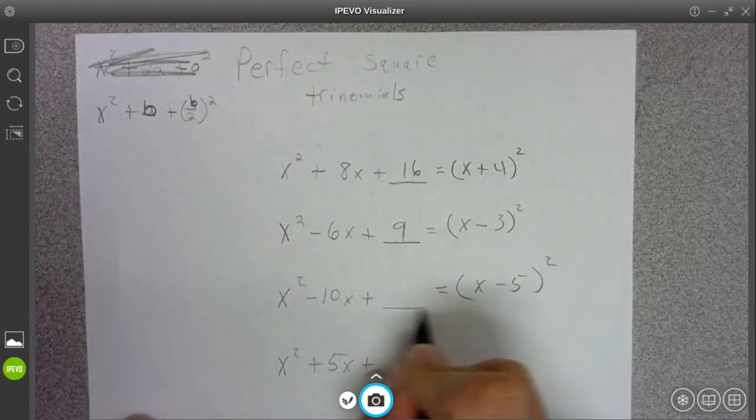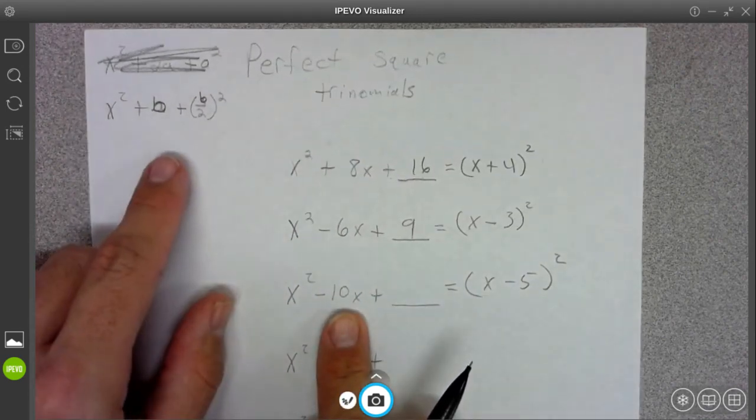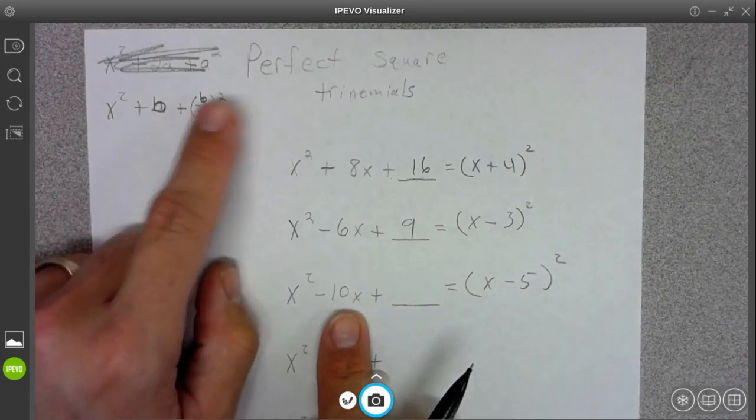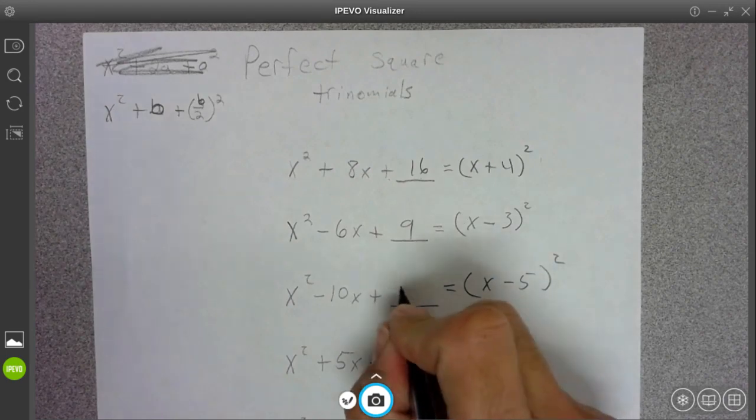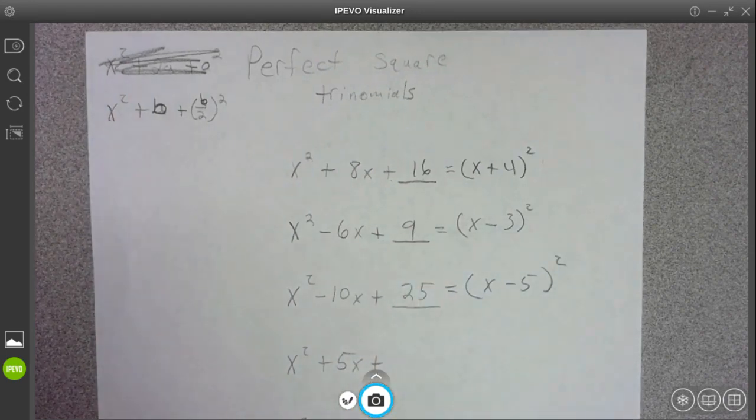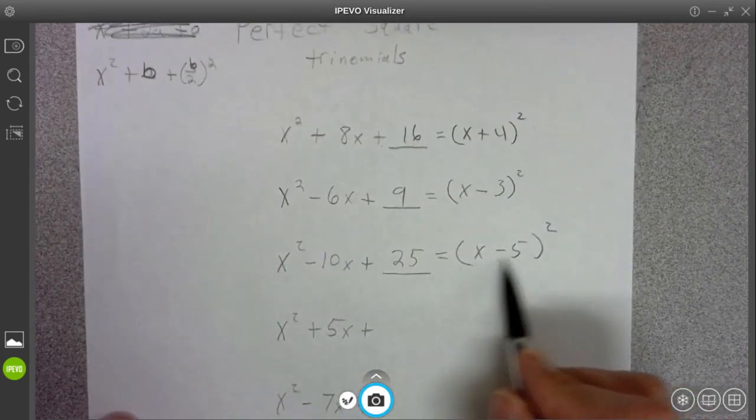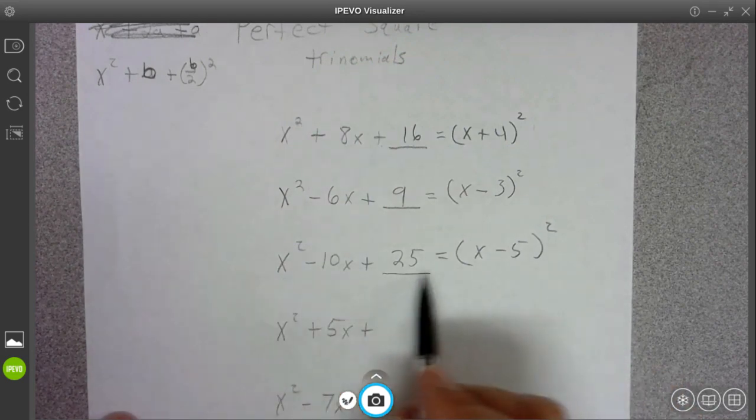So get my missing piece. Remember, we're going to cut it in half and then square it. So half of 10 is 5, and then 5 squared is 25. And go ahead and check it out. When you multiply this out, you're going to get this original.